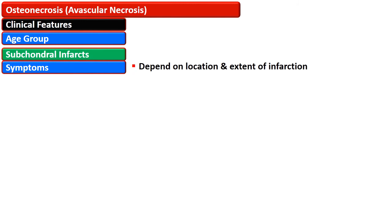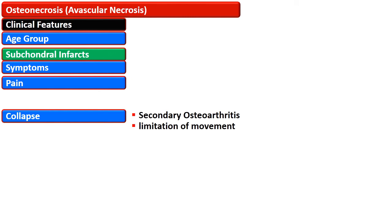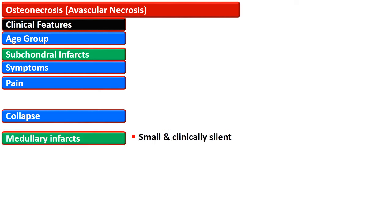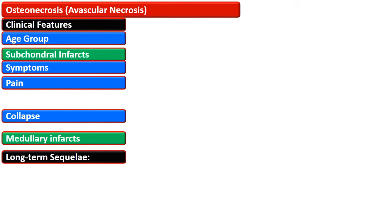Osteonecrosis typically affects a man of 35 to 45 years of age. There are two types of lesions: subchondral and medullary. Subchondral bone infarct symptoms depend on location and extent of infarction — usually pain with activity, becoming constant with secondary changes, with aching in the groin or hip and limping. If there is collapse, it results in secondary osteoarthritis and limitation of movement. Medullary infarcts are small and clinically silent. Long-term sequelae include malignant tumors such as osteosarcoma, malignant fibrous histiocytoma, and fibrosarcoma.